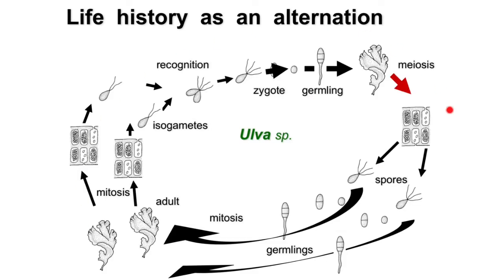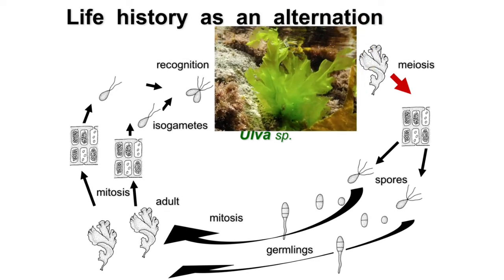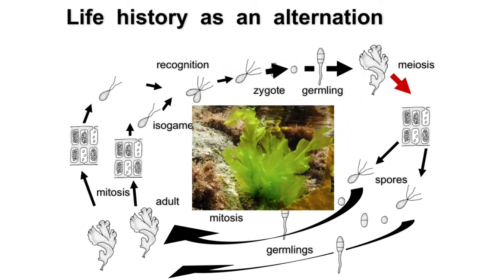This is the same picture as in the previous slide but with a little more detail. Here we take as an example Ulva, which is a green alga. Looking at this picture, we cannot tell by appearance whether it is a diploid organism or a haploid organism, whether it is a sporophyte or a gametophyte. As I said earlier, sometimes sporophytes and gametophytes look differently, but sometimes we cannot tell the difference.